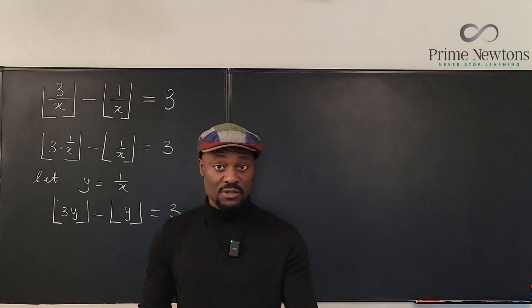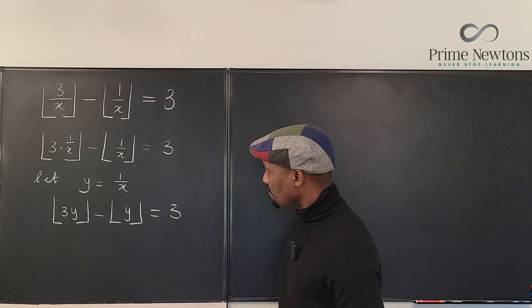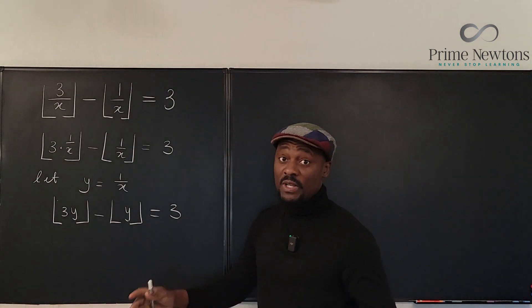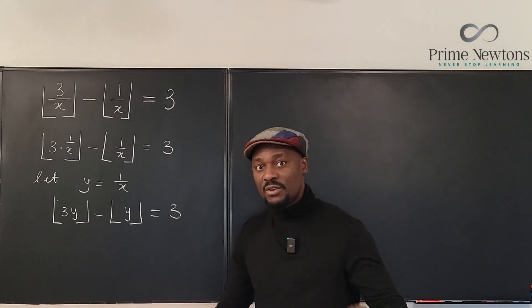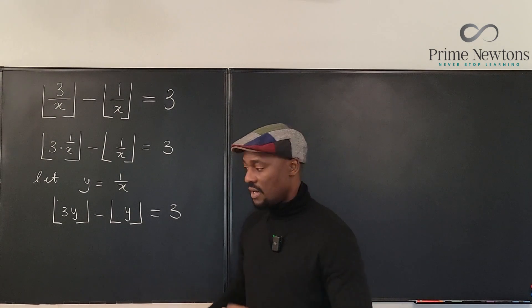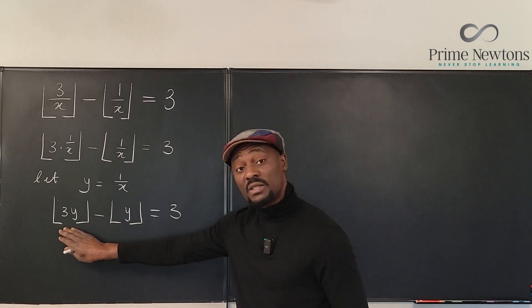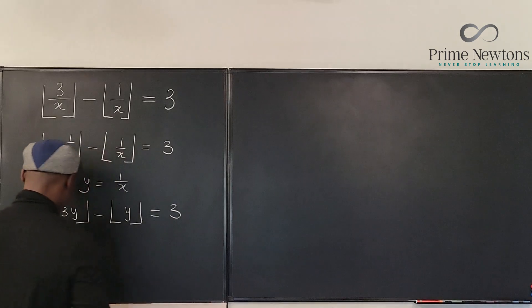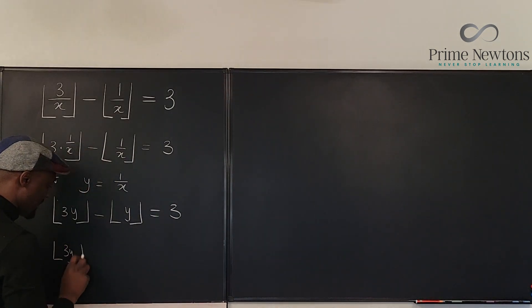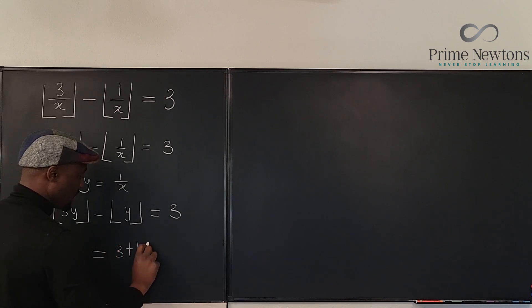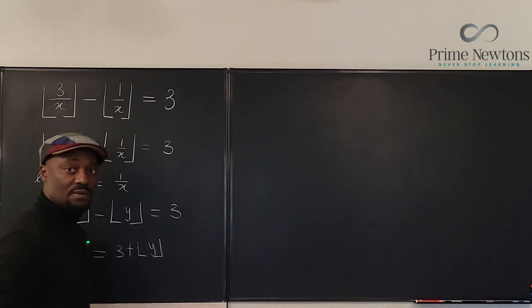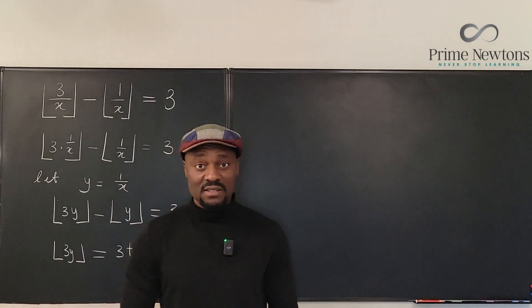And there's one more thing we can do. We can try to write 3y in terms of, that's a strategy you use consistently, write one of the terms in terms of the other. So I would say 3y, which is the more complicated one, will be written in terms of the simpler one. So I can say that the floor of 3y is exactly equal to 3 plus the floor of y. So if we can get the floor of y, then we can get the floor of 3y, and maybe that will help us get our answer.